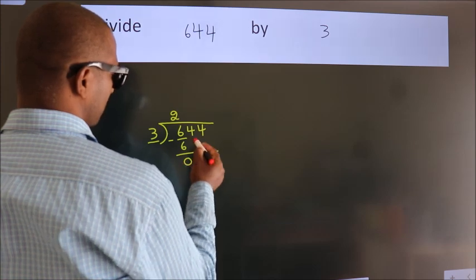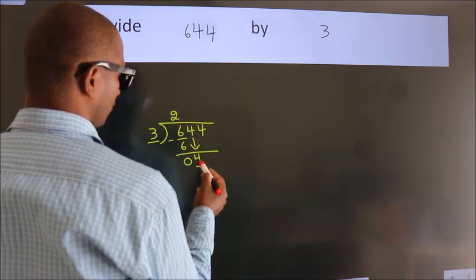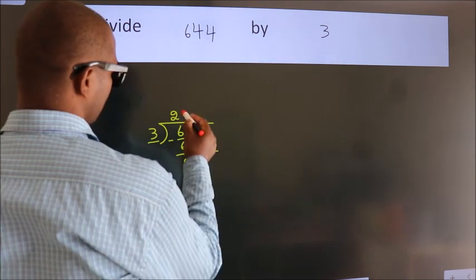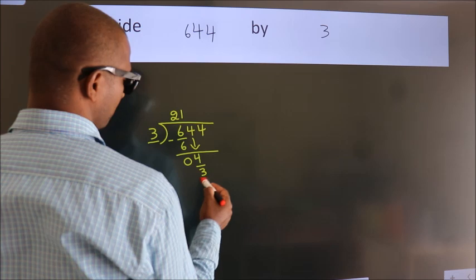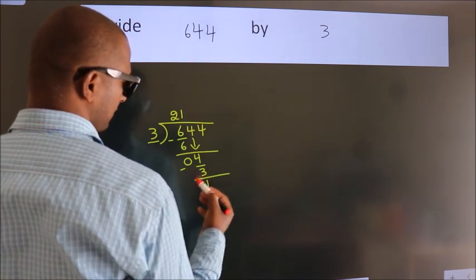After this, bring down the beside number, so 4 down, so 4. A number close to 4. In 3 table is 3 1s, 3. Now, we subtract, we get 1.